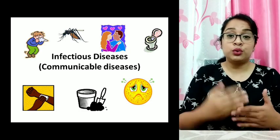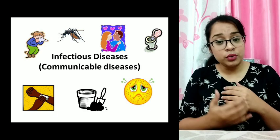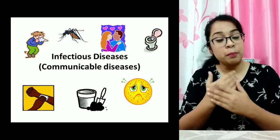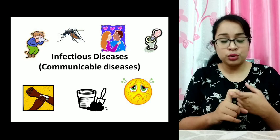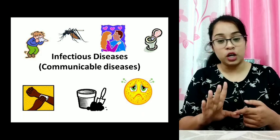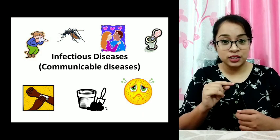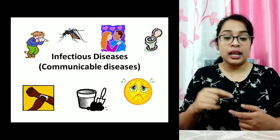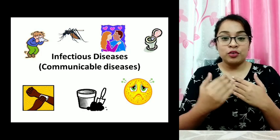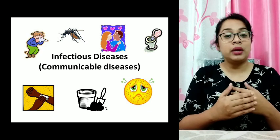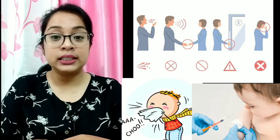Another way is through wounds or cuts. If you get a cut or wound you should cover it with a band-aid. Whenever you get a cut you receive an injection — that is the tetanus injection, for the disease tetanus. In the place of the cut, germs may enter and cause certain diseases.